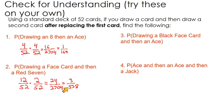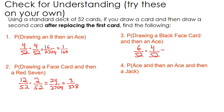The probability of drawing a black face card and then an ace: there are three face cards in every suit and two black suits, so there are six black face cards out of 52. There are four aces — one in each suit — so four out of 52. When you multiply straight across you get 24 out of 2704. Interestingly, this probability is exactly the same as the previous one — it also simplifies to three over 338.